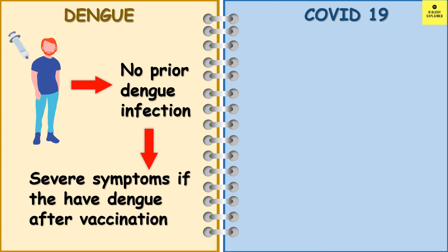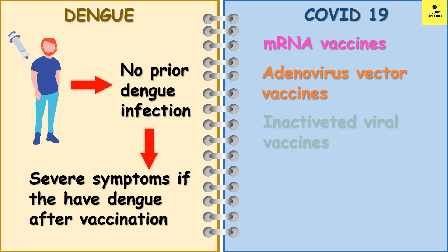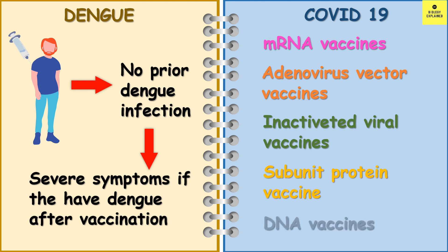For COVID-19, there are different kinds of vaccines like mRNA vaccines, adenovirus vector vaccines, inactivated viral vaccines, subunit protein vaccines, and DNA vaccines. However, a lot more research and data will tell us which vaccine is suitable and whether we need boosters.